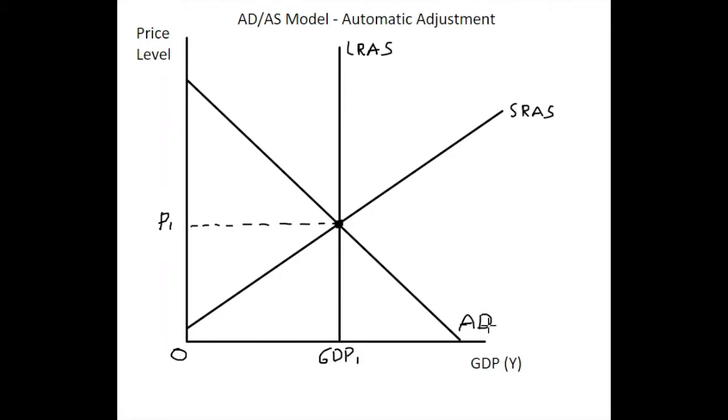What we see here initially is our aggregate demand curve will shift downwards to the left, so that is an aggregate demand curve negative shock with AD shifting to AD1.